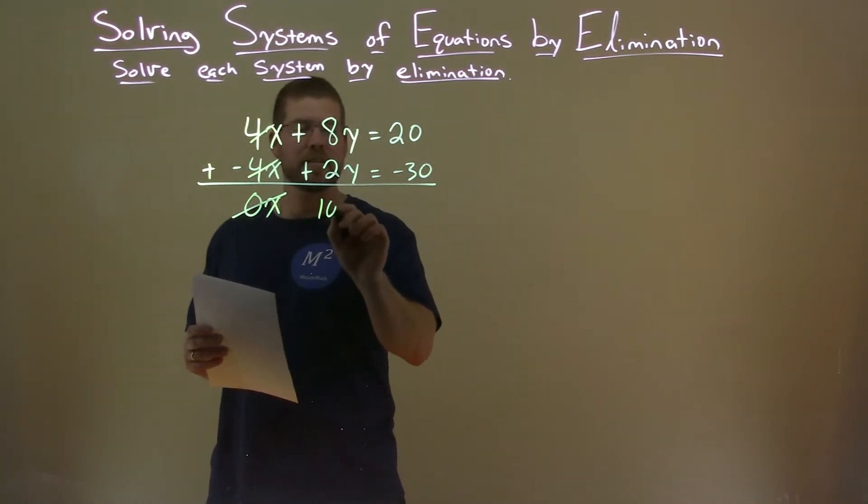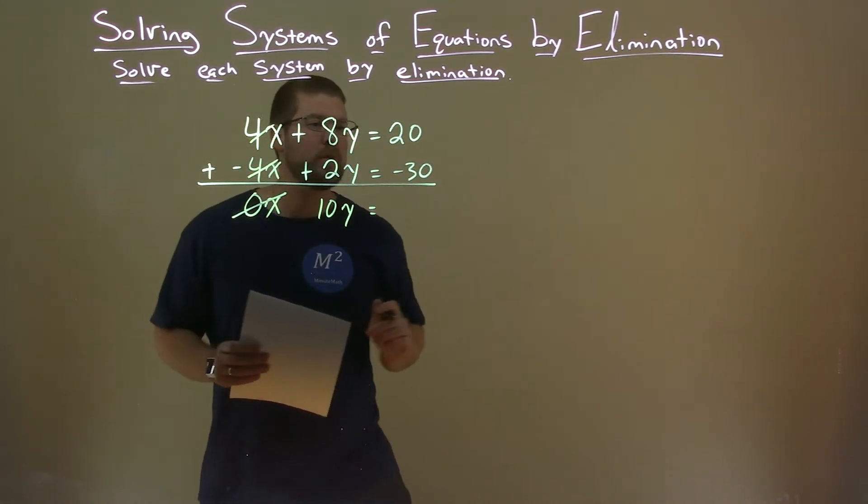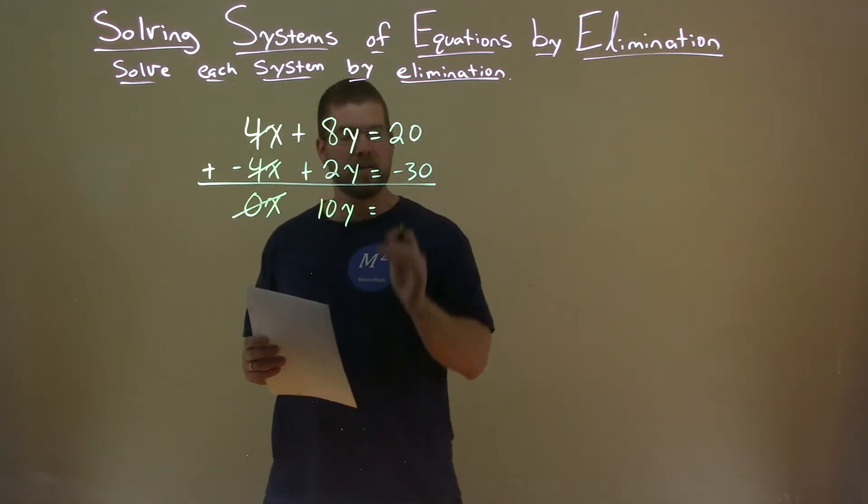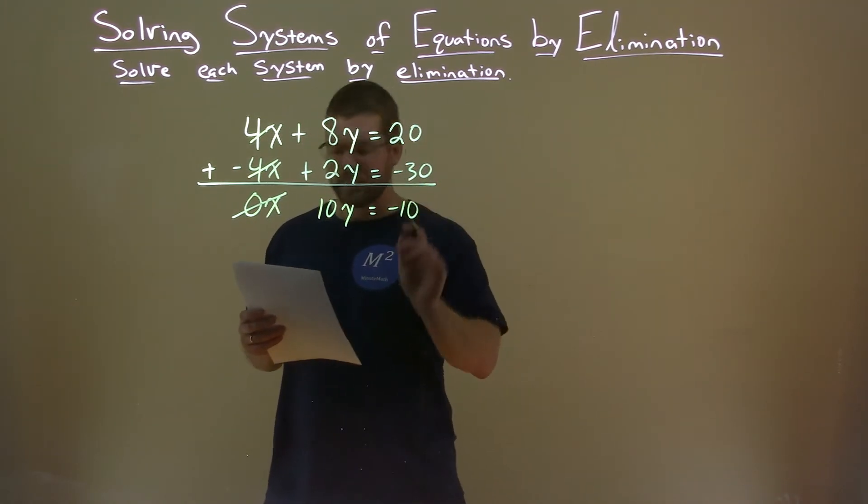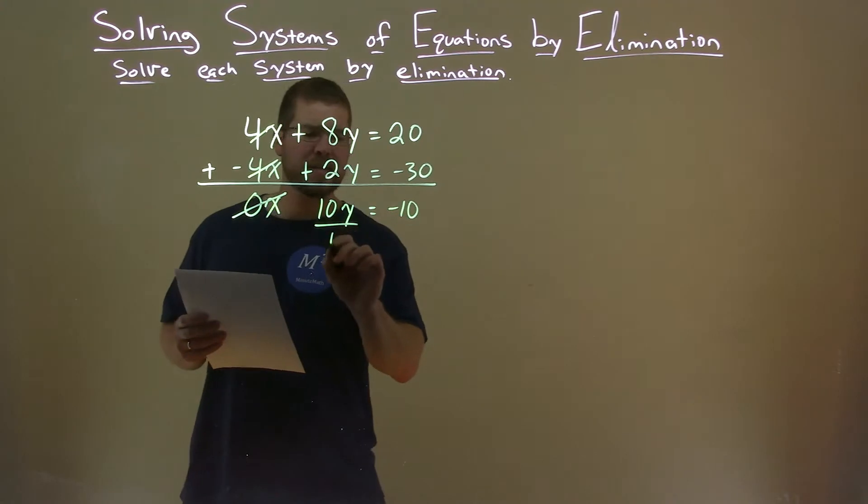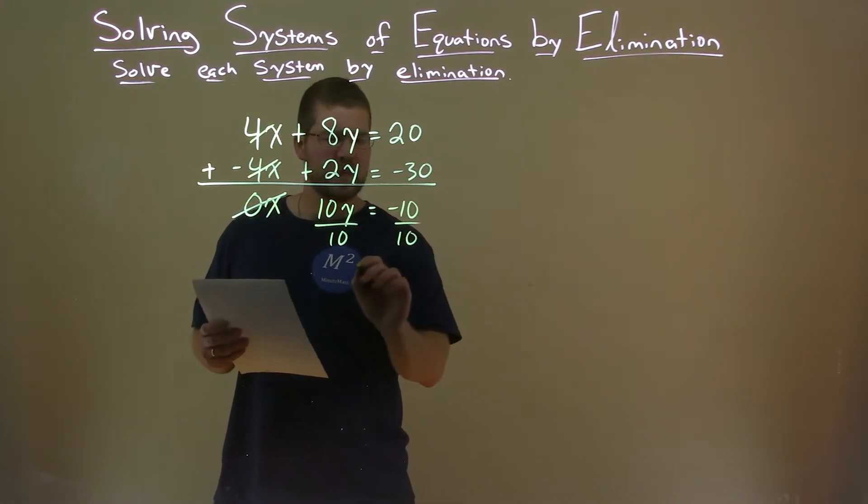8y plus 2y is 10y equals 20 plus a negative 30 is negative 10. Divide both sides by 10, and this one's fairly easy so far.